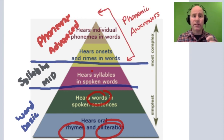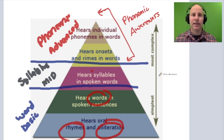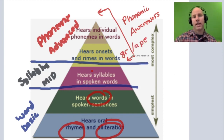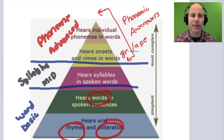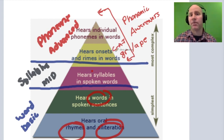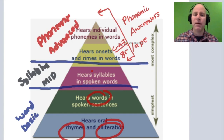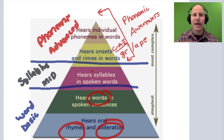Within phonemic awareness — hearing individual sounds in a word — there are many individual skills. For example, taking a one-syllable word like 'grape' and breaking it into its onset and rime, or taking a word like 'cat' and segmenting each individual phoneme. 'Cat' is made up of three phonemes. Or blending those phonemes together.